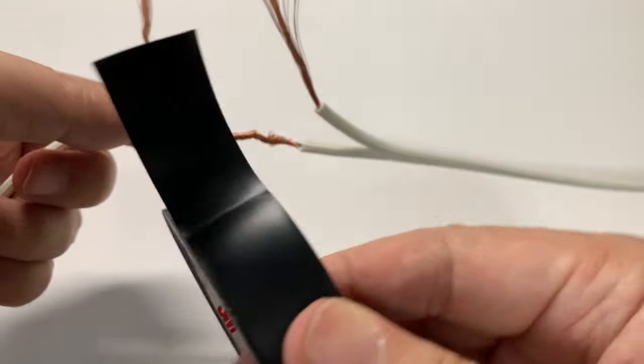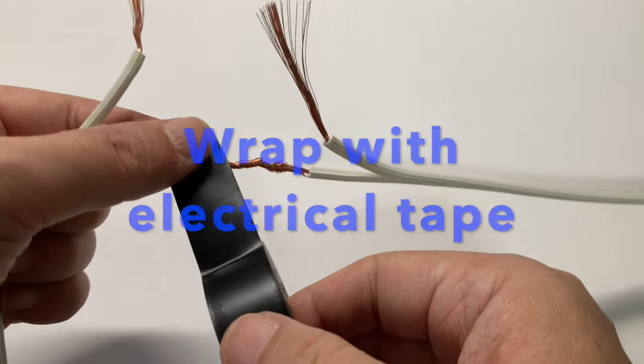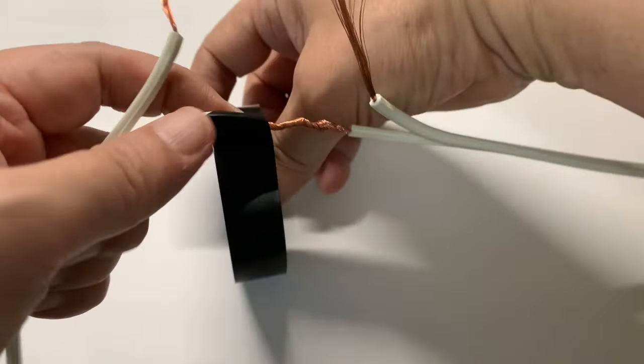Then wrap the bare wires with an electrical tape, making sure you overlap the electrical tape over the start and the end of the wire insulations.